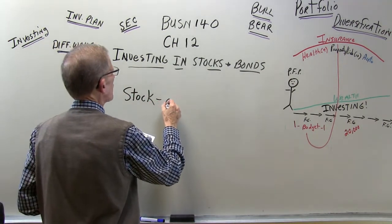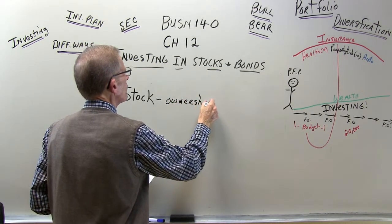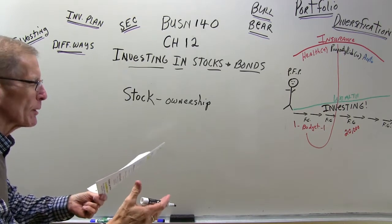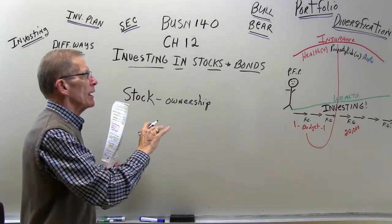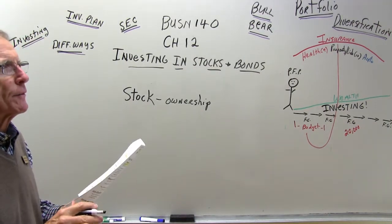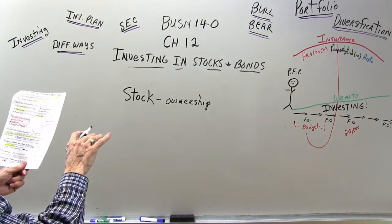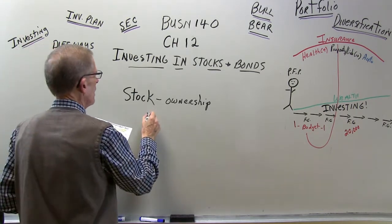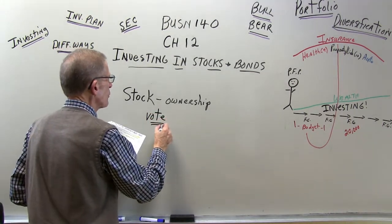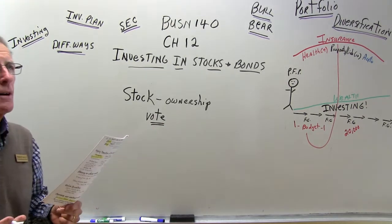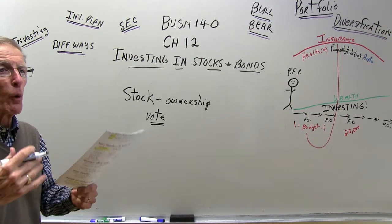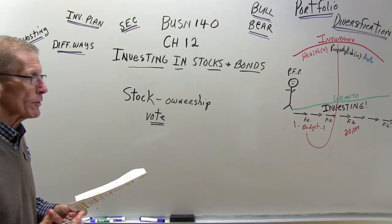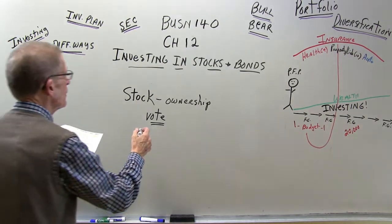Stock is ownership — you are an owner. They call you a residual owner, which means you do own shares or part of the company, but your ownership takes place after every other debt and obligation is resolved. So the debts of a corporation have to be taken care of before you would receive anything. As a common stockholder you can also vote at stockholder meetings.